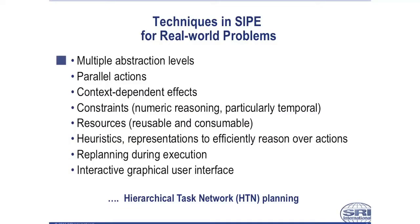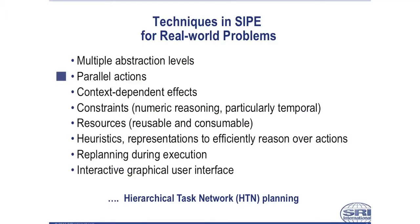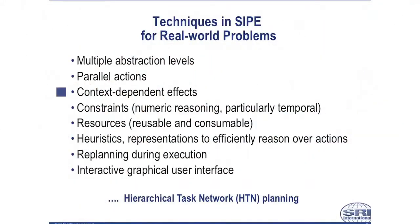The first technique is multiple abstraction levels. Many real problems have distinct natural abstraction levels, making them natural fits for HTN planning. These levels are a powerful way to control the search, and they're a great way to interact with humans, because a primitive action STRIPS-style plan at the lowest level of detail can be very difficult to understand. The next item is parallel actions. Realistic domains generally have parallel agents executing activities at the same time, and these agents must coordinate their activities. Parallelism can cause computational problems in AI planners, and some AI planning systems produce only sequential plans. Next is context-dependent effects,